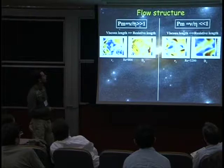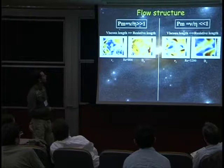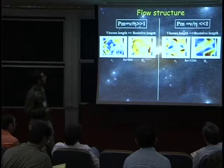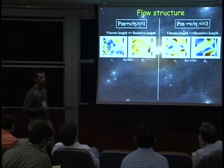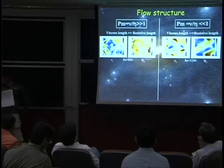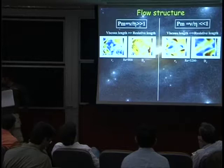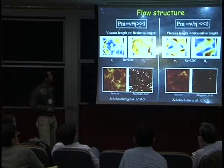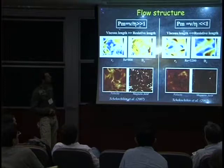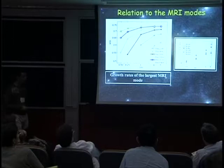We can also look at the flow structure in these models. Here are snapshots from simulations at PM much larger than one and at PM much smaller than one. In the vertical magnetic field snapshots you tend to see current sheets appearing, similar to what I showed before. The flow structure is much different in the small PM case, which seems to be very much dominated by the channel flow. You can compare that with results from homogeneous turbulence simulations and find the same sort of current sheets.